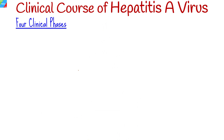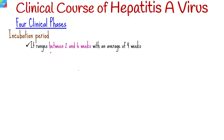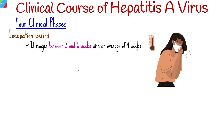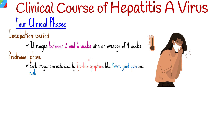Hepatitis A follows four clinical phases. The first phase is the incubation period, before clinical symptoms manifest. It ranges between two and six weeks, with an average of four weeks. The second phase is prodromal, representing the early stages of the disease, characterized by flu-like symptoms such as fever, joint pain, and rash.